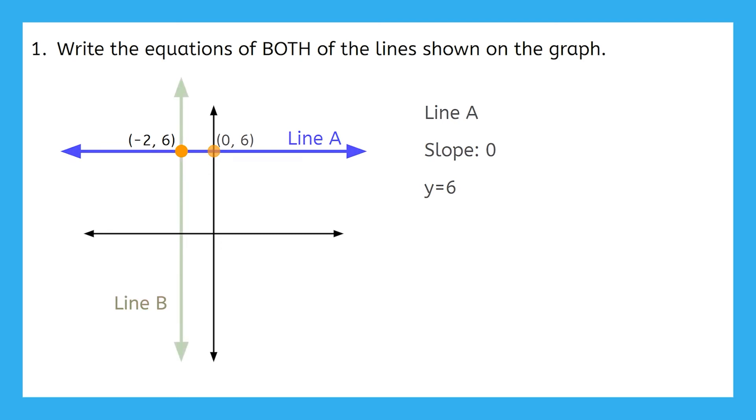Now we can look at the vertical line, line B, which we know also goes through negative 2 comma 6, and has an undefined slope since it's vertical. I won't be able to use the slope-intercept form with an undefined slope, so what do all of the points on this line have in common?